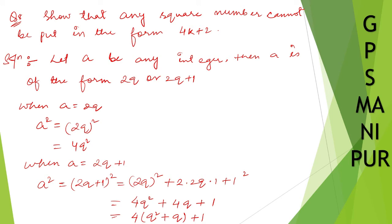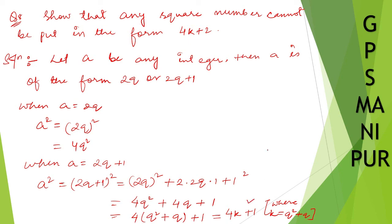Now, if you write k equal to q squared plus q, you can write this as 4k plus 1. So here we got 4k plus 1, but we need to get 4k plus 2. Here also we didn't get 4k plus 2 — we got 4q squared, which we can write as 4k.